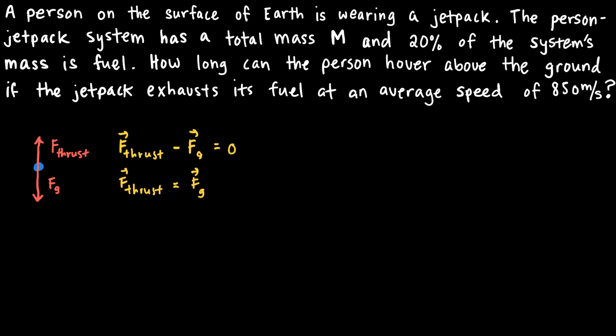The left-hand side of this equation, F thrust, can be written as dp/dt, where p represents the momentum of the system. As fuel is ejected from the jetpack, the momentum is changing because the mass of the system is changing. On the right-hand side, the gravitational force can be written as m times g. Because the mass of the system is changing but the exhaust velocity is constant, the left-hand side can be written as dm/dt times a constant negative velocity v, which equals 850 meters per second in this case.